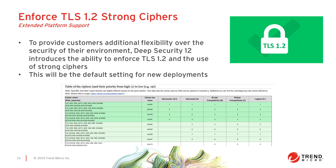Another new platform support feature in Deep Security 12 is the enforcement of TLS 1.2 strong ciphers. To provide customers additional flexibility over the security of their environment, Deep Security 12 introduces the ability to enforce TLS 1.2 and the use of strong ciphers. This does not mean you can't use other versions of TLS — older versions of Deep Security upgraded to Deep Security 12 still have backwards compatibility with older TLS versions.